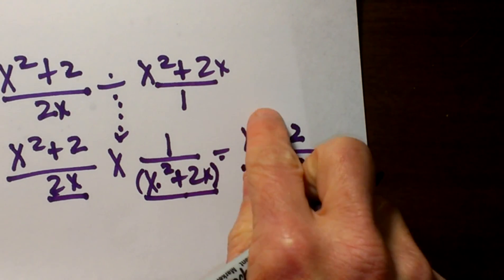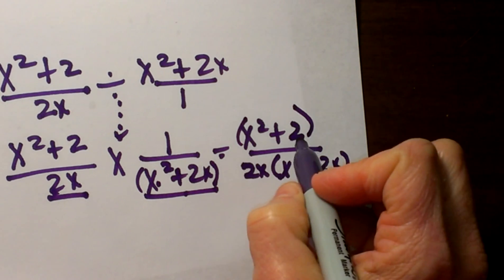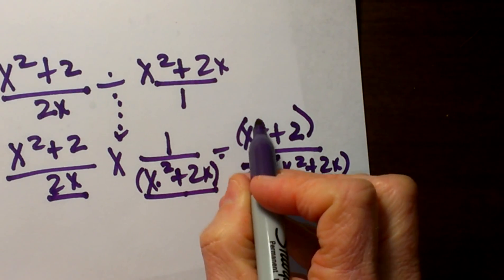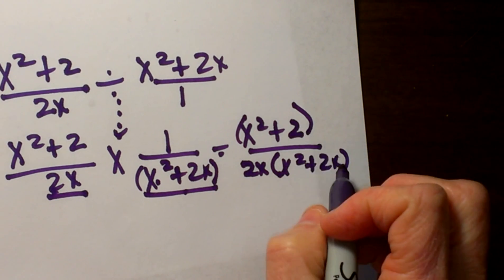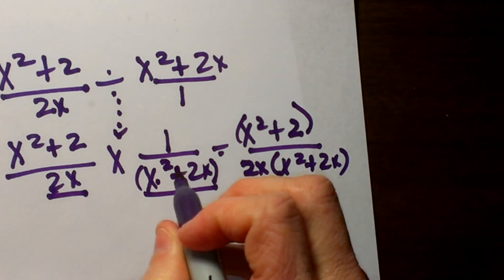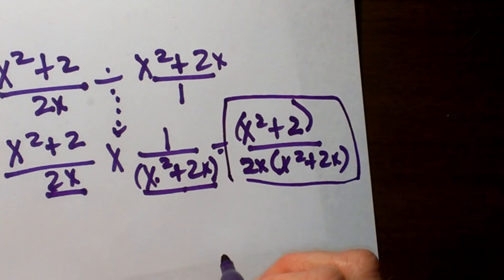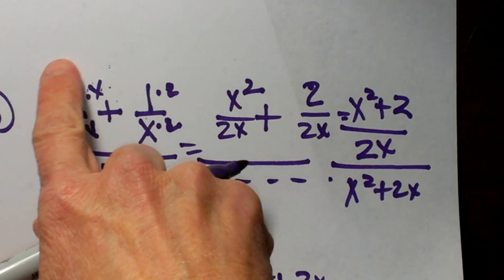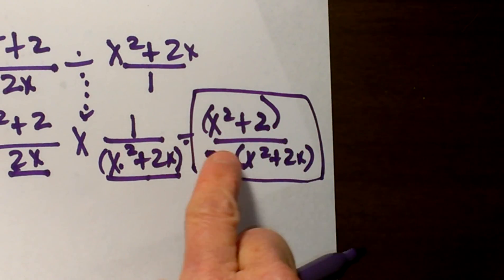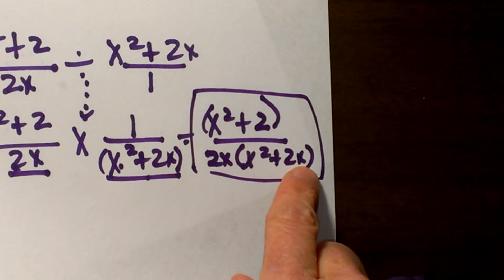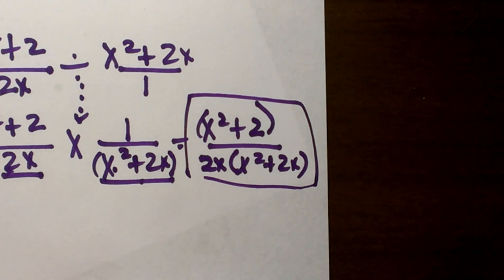I like to keep this factored just to see if I can cancel anything out. A binomial has to match exactly with another binomial. Notice this is x squared plus 2, and this is x squared plus 2x — those cannot cancel because the terms don't match: one has just 2 and the other has 2x, and there is no coefficient I factored out on top. So that is actually my final answer: this fraction simplified all the way down to x squared plus 2 all over 2x times x squared plus 2x. I hope this video was helpful on how to simplify some complex fractions.